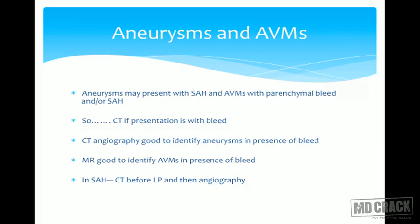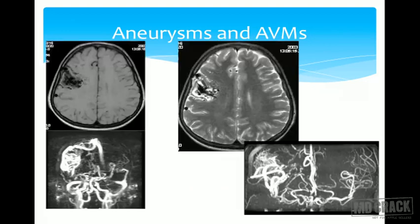Aneurysms may present with subarachnoid hemorrhage, and arteriovenous malformations (AVMs) with parenchymal bleed and/or subarachnoid hemorrhage. CT is the modality of choice when presentation includes a bleed. CT angiography is good to identify aneurysms in the presence of a bleed, while MRI is good for identifying AVMs. In subarachnoid hemorrhage, CT may be performed before lumbar puncture, followed directly by angiography.